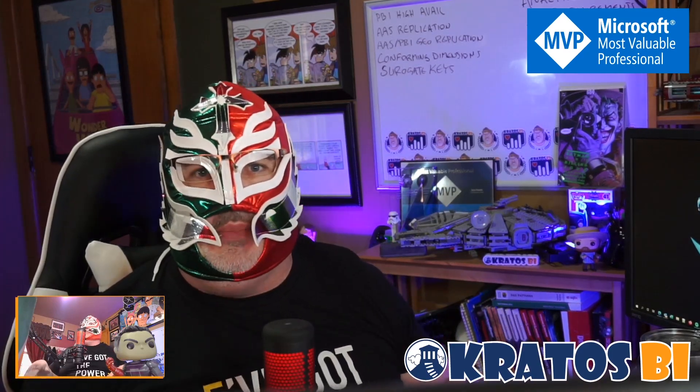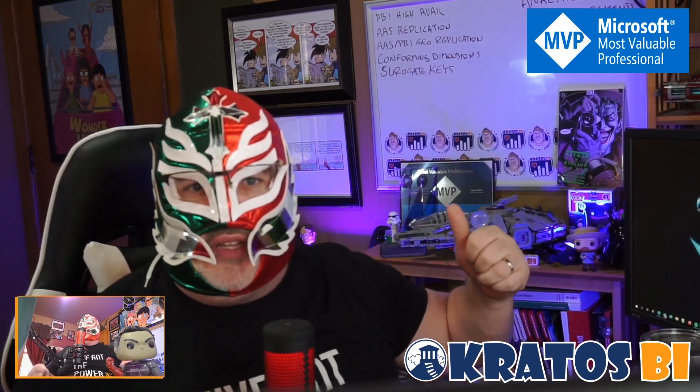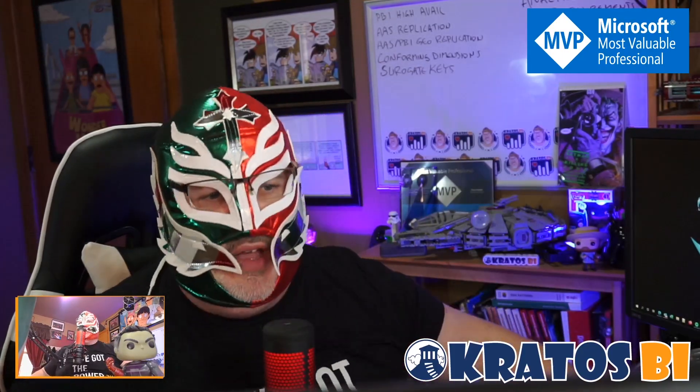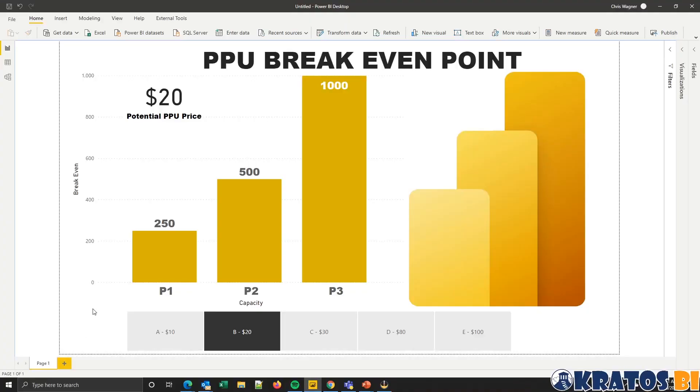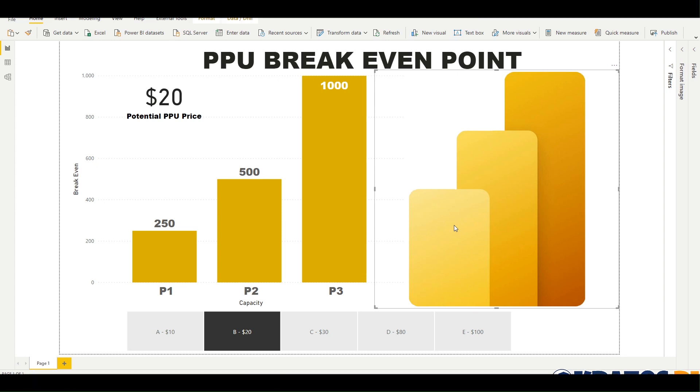Thank you so much for tuning in to the Power BI Luchador over at KarosBI.com. Looks like the lightweight will be back next time — he's got things on his board about Power BI high availability, replication, surrogate keys, and more. If you like the content, hit like, subscribe, and turn on that notification bell. Head over to KarosBI.com, buy him a coffee and he'll send you one of those classic Power BI stickers. Oh, and check out the new Power BI icon — thoughts? Thanks very much, peace.